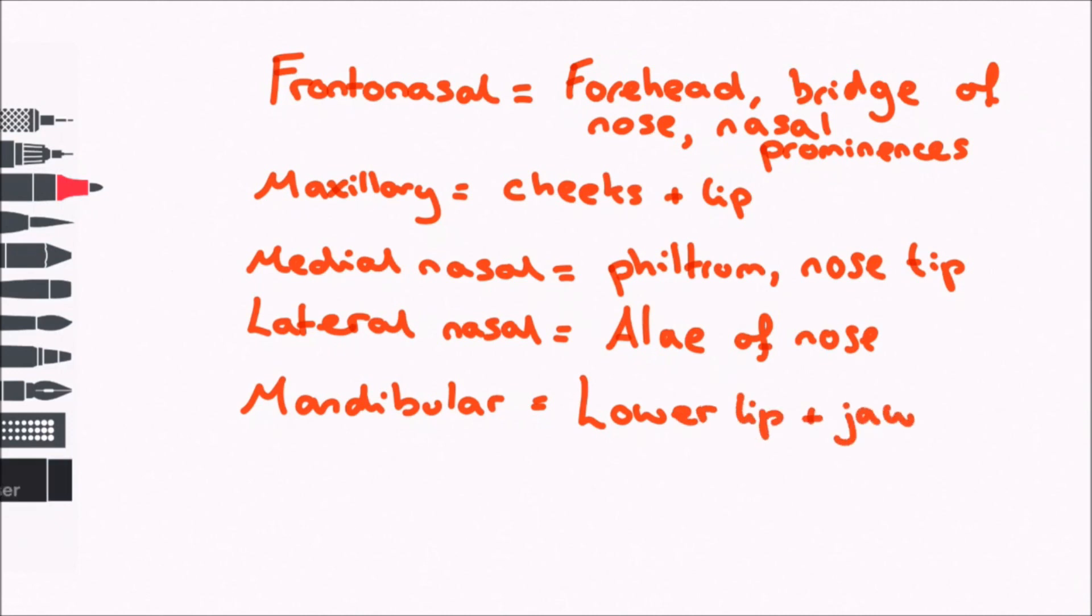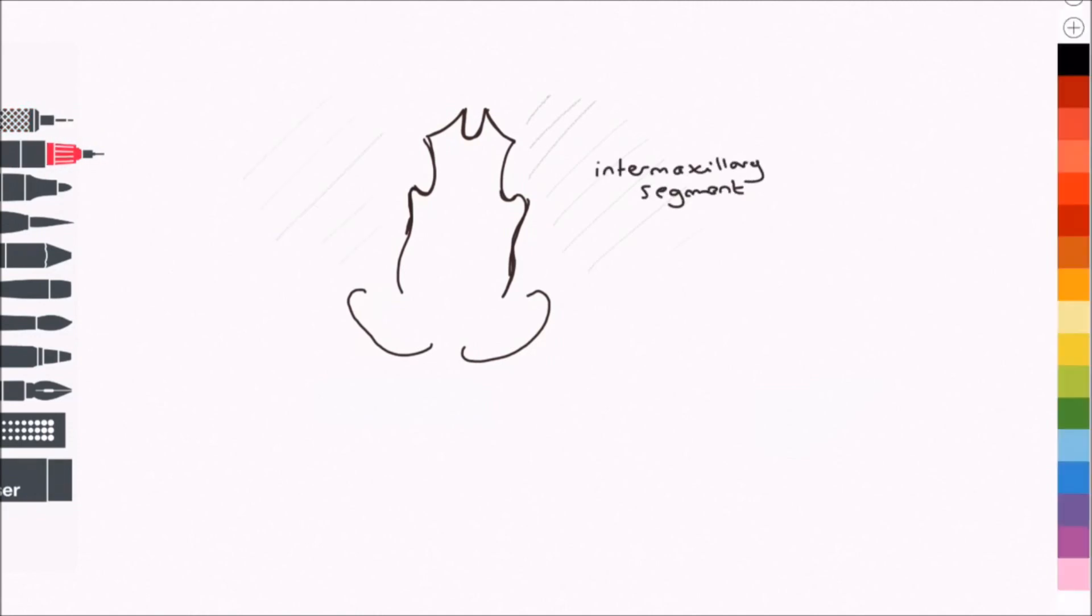Now we have discussed general facial formation, we are going to talk about a clinically important process: the development of the palate at the roof of the mouth. To orientate ourselves, let's look at a coronal section of the face. Here we can see the oronasal cavity.